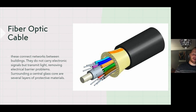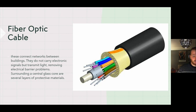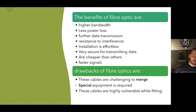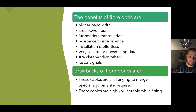Fibre optics can connect networks between buildings. They do not carry electrical signals but transmit light, removing electrical barrier problems. Fibre optics have several layers of protective materials surrounding a central glass core. The benefits are that they have higher bandwidth, less power loss, further data transmission, resistance to interference, and are quite lightweight making installation physically easy. They are also very secure for transmitting data.